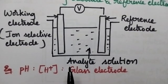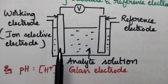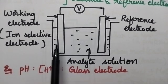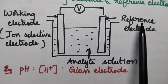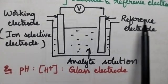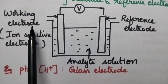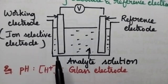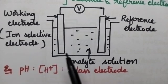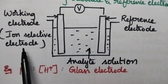A potentiometric sensor generally consists of two electrodes. One electrode is called the working electrode and the other is called the reference electrode. Generally, the working electrode is an ion selective electrode. Which ion we are supposed to detect — depending upon that ion — we have to select the appropriate ion selective electrode.